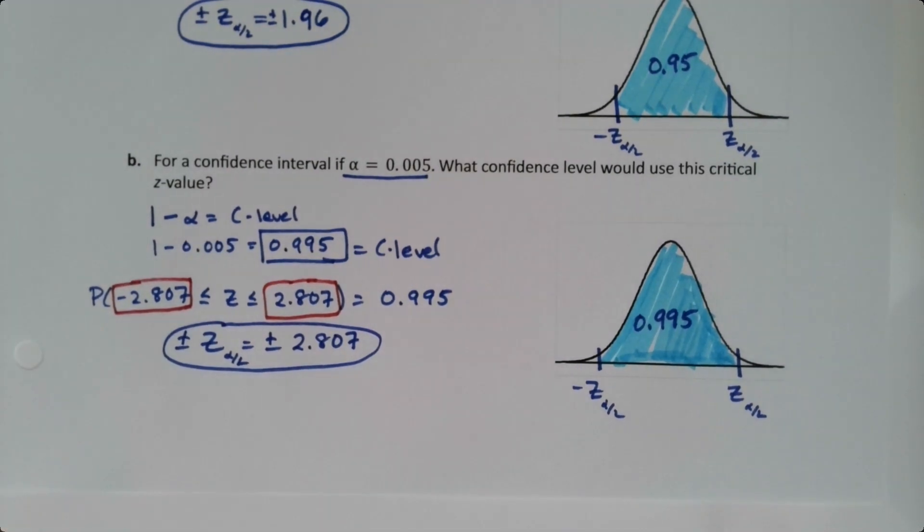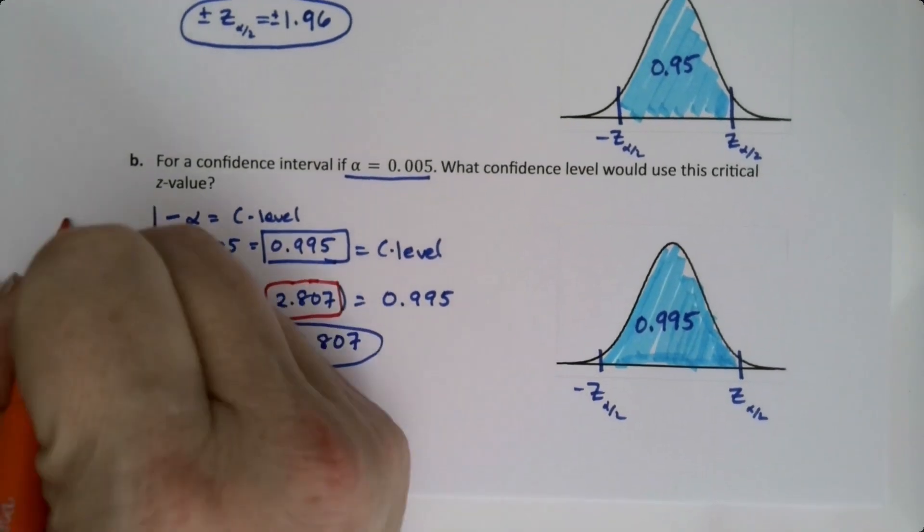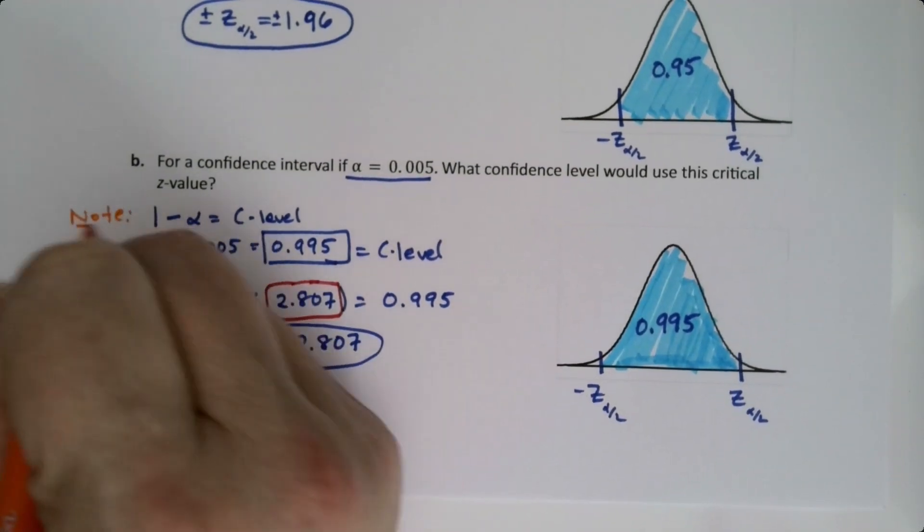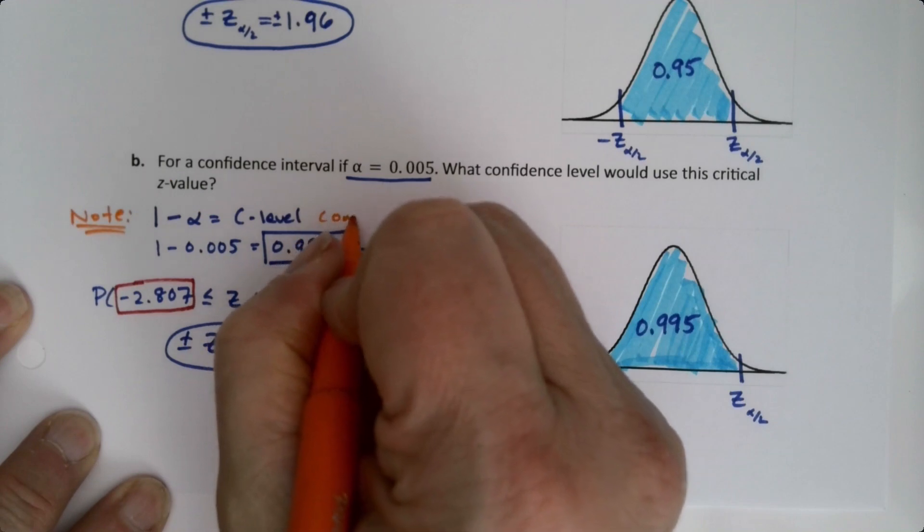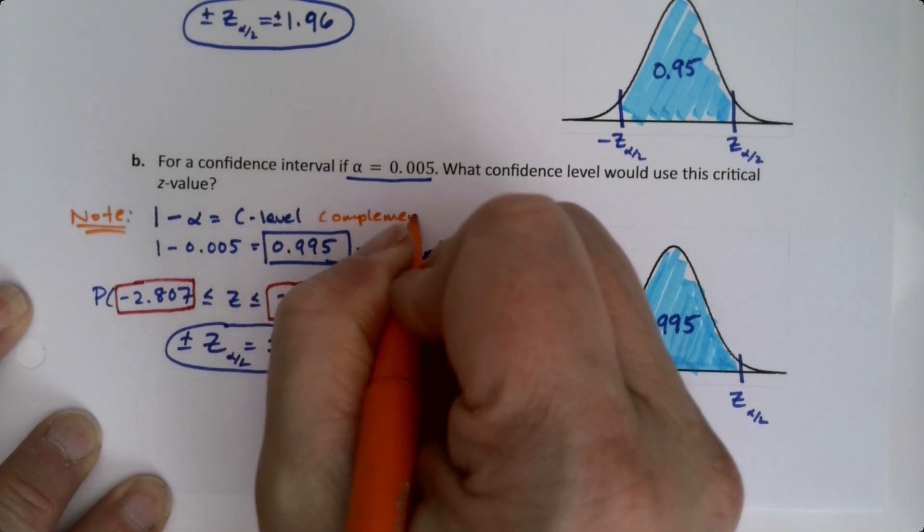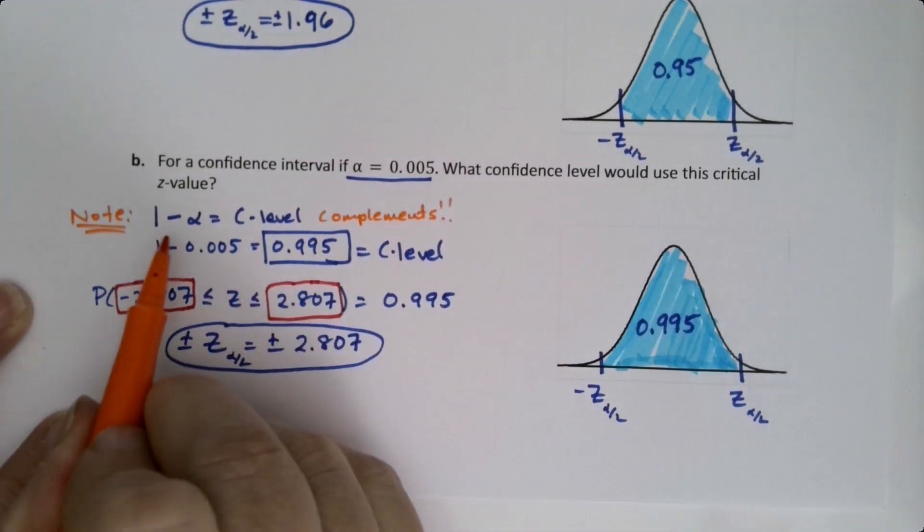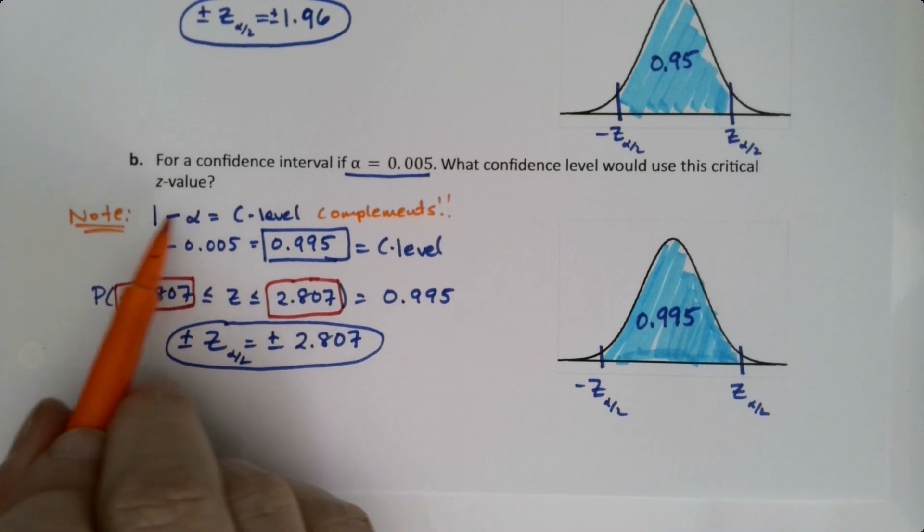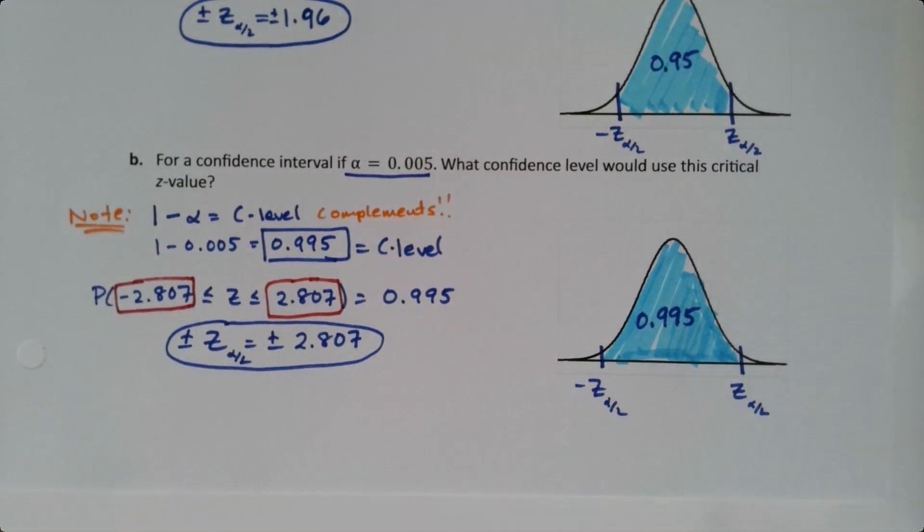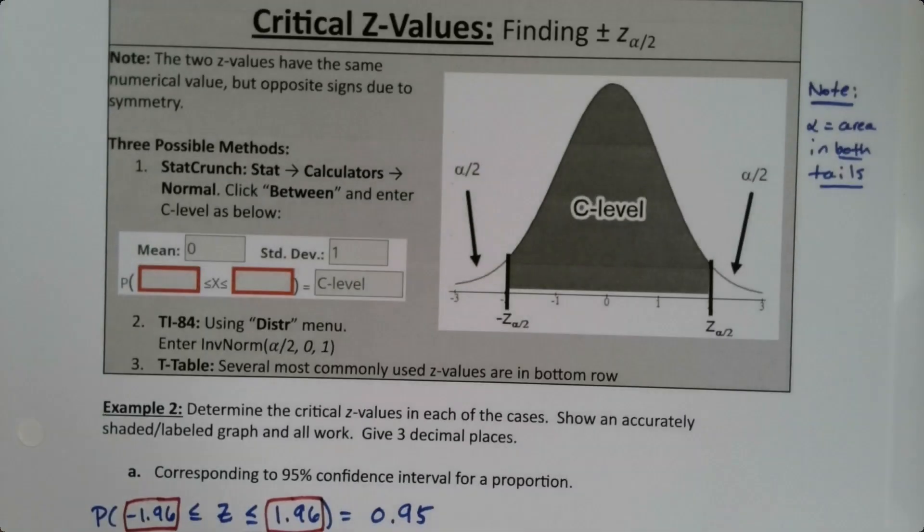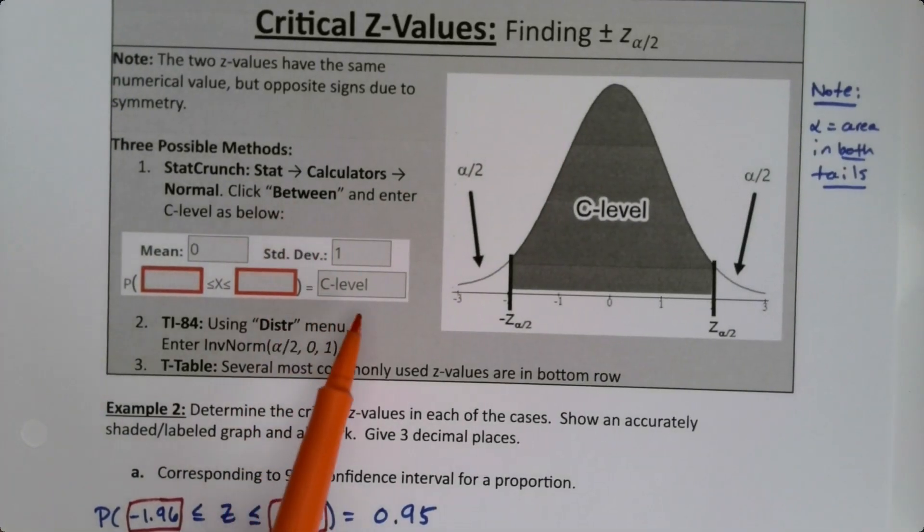So, you just have to remember that c-level and alpha are complements. So, I'm going to put a little note here. Right? They're complements. That's why they add up to 1, right? That's why when I take alpha away from 1, I have the c-level and vice versa. If I took the c-level away from 1, I would have alpha because they're complements of each other. And I was following the instructions right up here. Clicked between, put my c-level in, and boom.